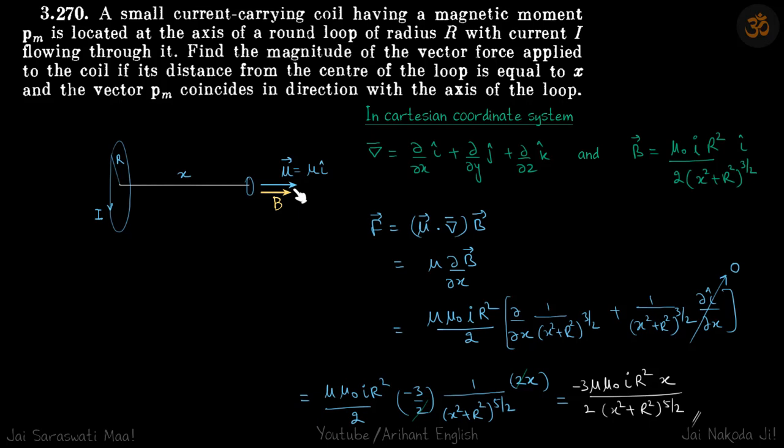So mu dot del, mu because it is on the same axis can be written as mu i cap. So mu i cap dot del operator will be mu d by dx that we are applying on b vector. So mu d by dx of b vector, this is the force.